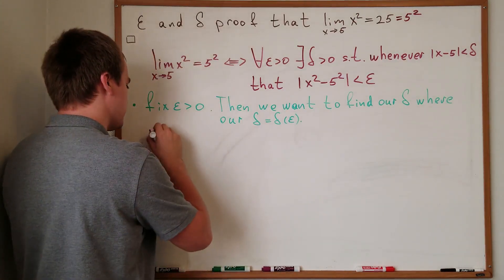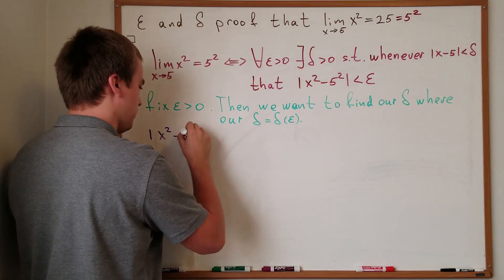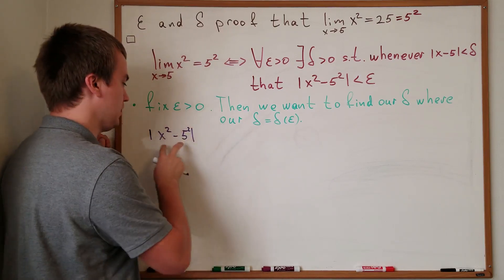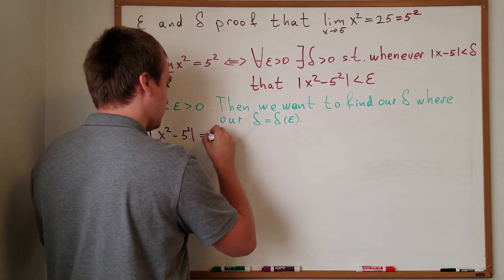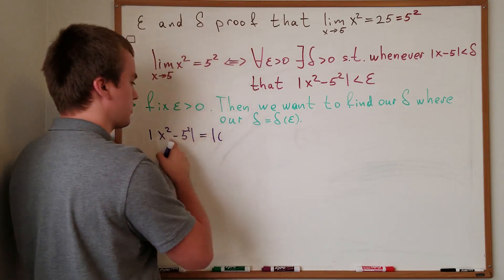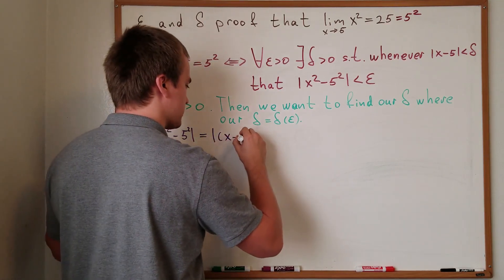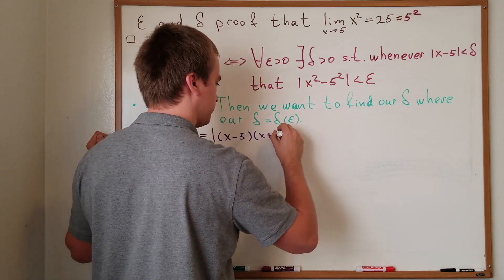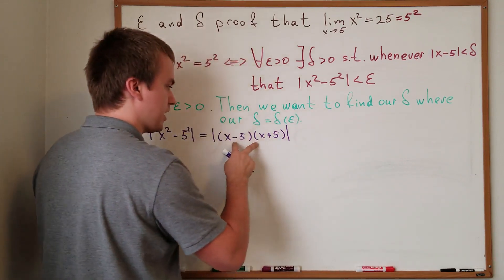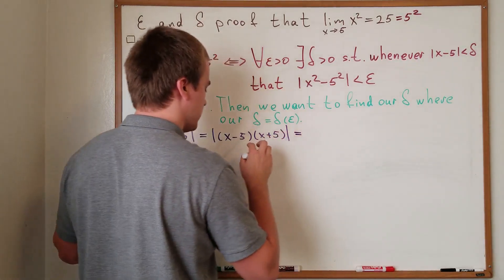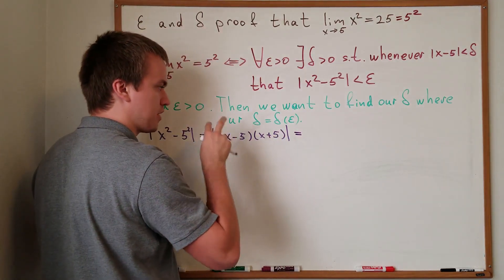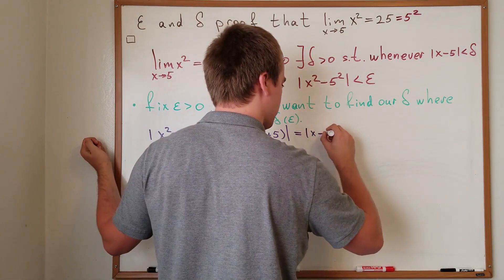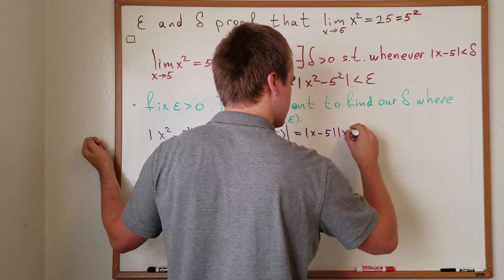So if we want to do this, let's first write x squared minus five squared. What can we do? We can factor x squared minus five squared. So we get x minus five times x plus five. And from here, since the absolute value of a product is the product of absolute values, we have the absolute value of x minus five times the absolute value of x plus five.